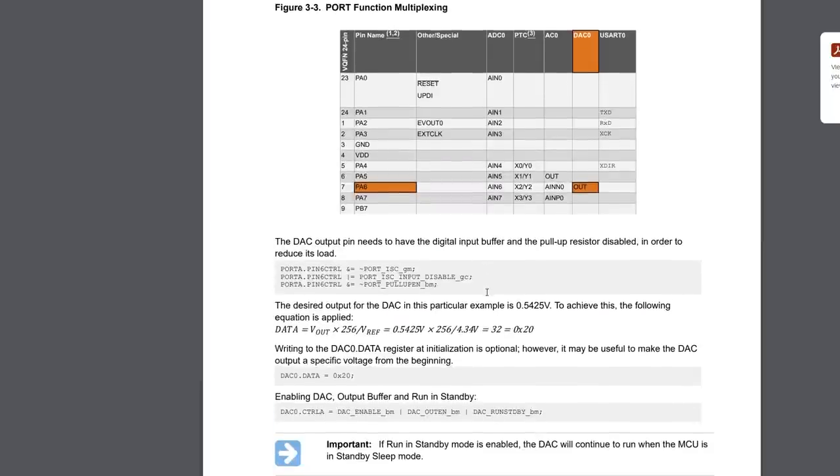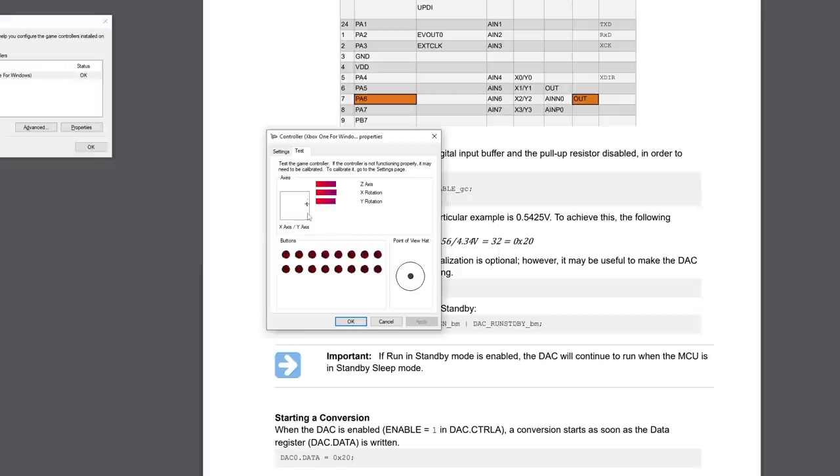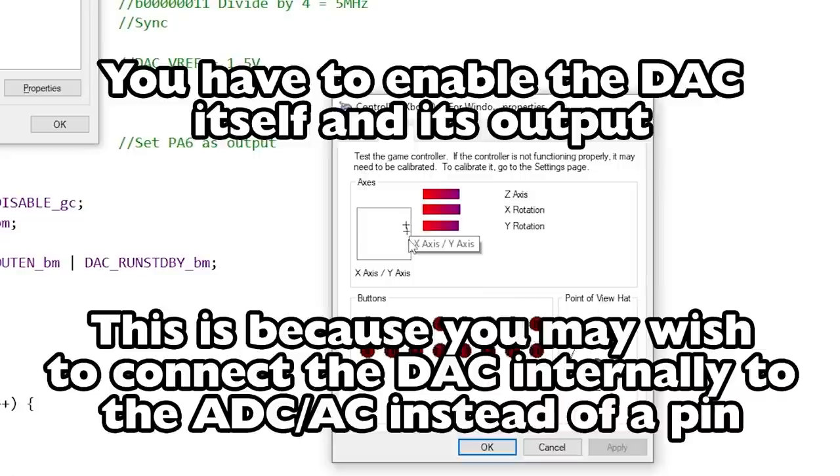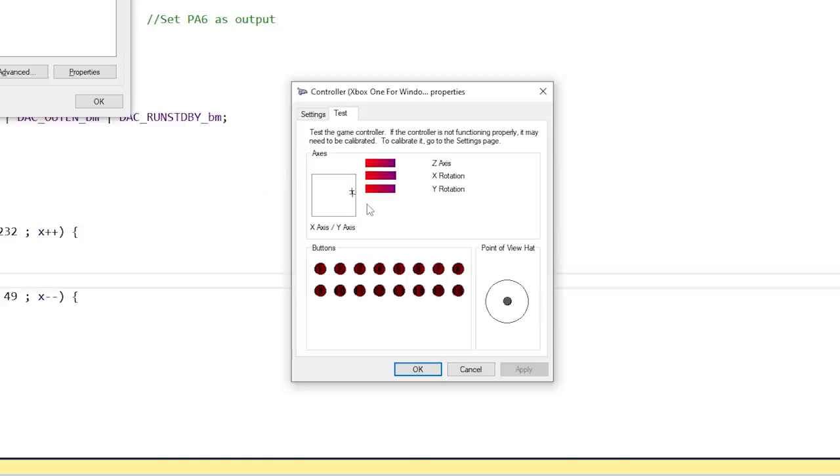Here's a microchip data sheet. The DAC output pin needs to have the digital input buffer and the pull-up resistor disabled in order to reduce its load. I guess that's what we missed from the data sheet, but I'm trying to do stuff in here. I'll squish you later. Oh, I see what I missed here. I didn't set output enable in the control A register. Now it's doing something. It's weird that it's not going lower than that. Let me try to slow it down. All right, let's go into the middle. It's going from zero to, okay, I need to go higher than that. Yeah, because it's not going to go higher than 1.5. What was the voltage we had? 1.37? 1.37 divided by 1.5 is 91% of 255 is 232.